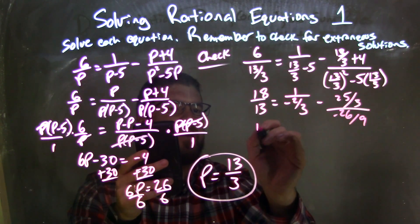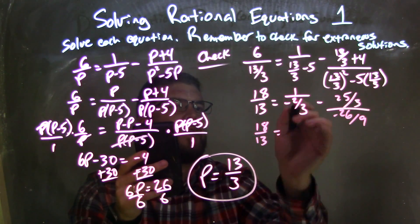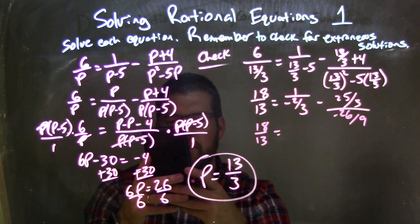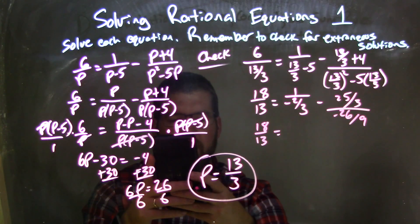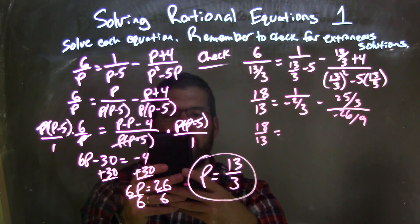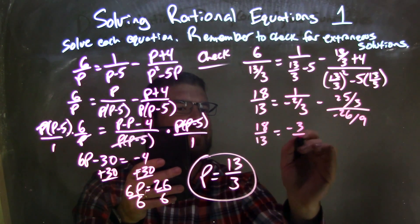So let's go simplify everything. We'll keep this 18 thirds right here, and then 1 divided by negative 2 thirds, I believe is negative 3 halves, but we'll double check here. 1 divided by 2 divided by 3 is 3 halves, yes, it's negative 3 halves, that's correct.